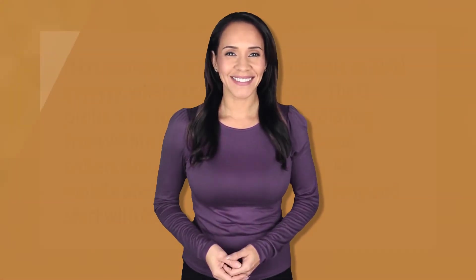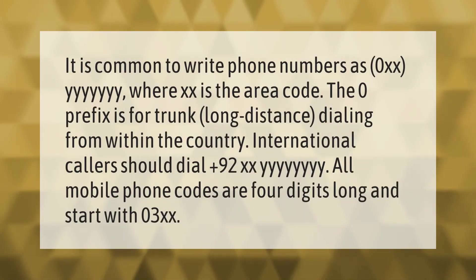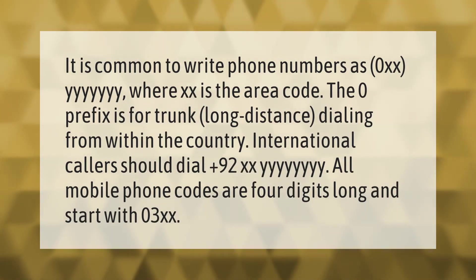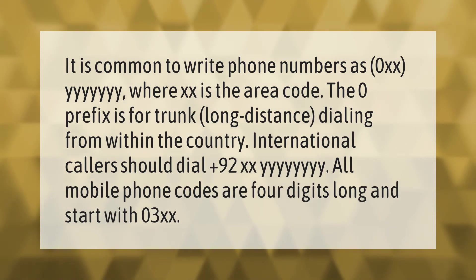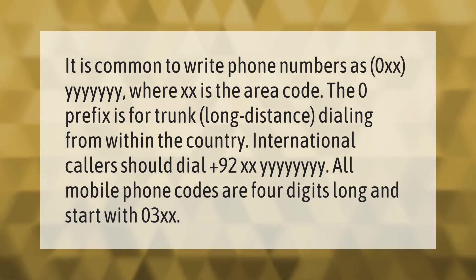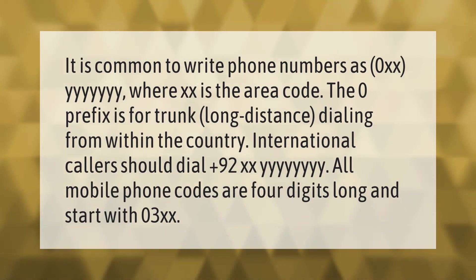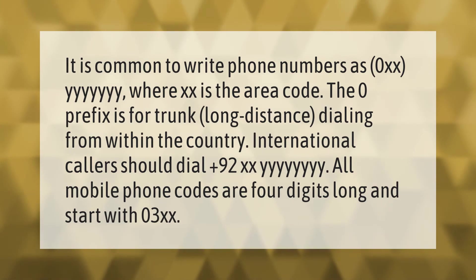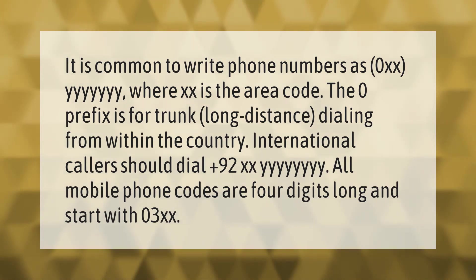It is common to write phone numbers as 0xx-yyyyyyy, where xx is the area code. The zero prefix is for trunk/long-distance dialing from within the country. International callers should dial +92-xx. All mobile phone codes are four digits long and start with 03xx.